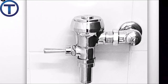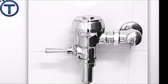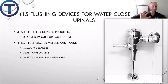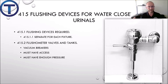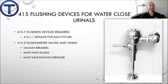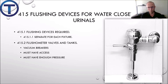I have pictured here a flushometer valve, but this section covers those kinds of valves as well as tanks. The fundamental requirement in 4.15.1 is that all toilets have some device in order to flush them, whether it's a flushometer or a tank. And 4.15.1.1 says that each fixture shall have its own flushing device — you can't have two bowls on one tank or one flushometer piped to multiple fixtures. One fixture, one flush device.